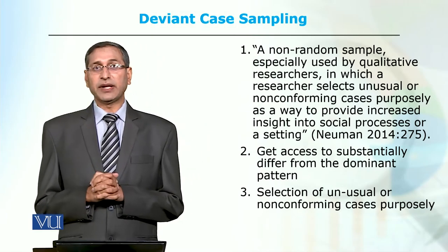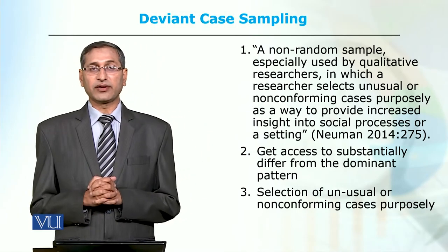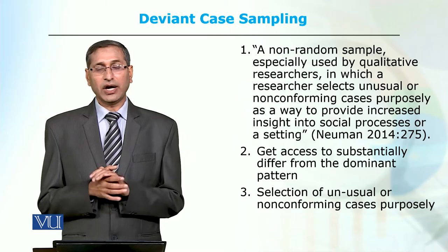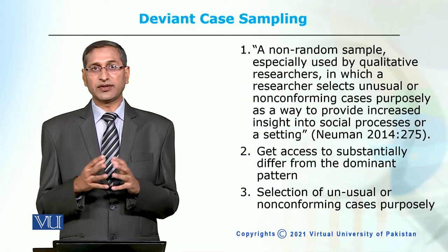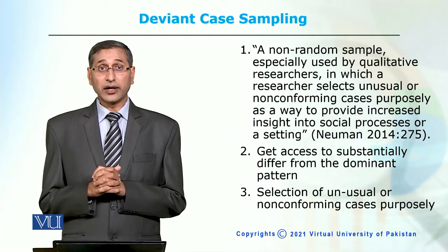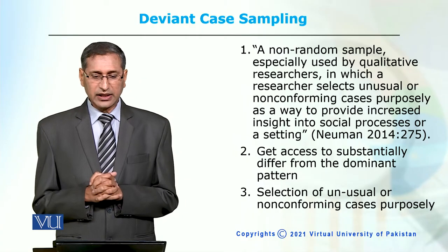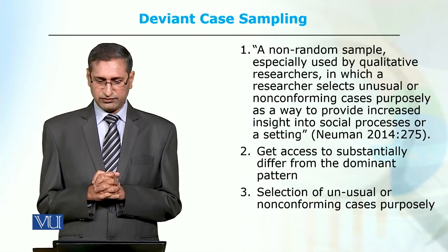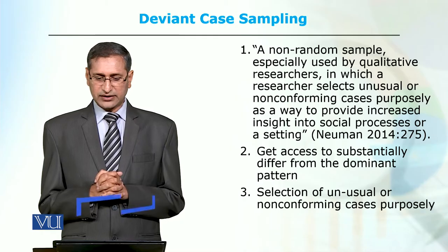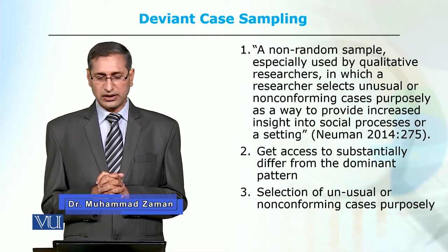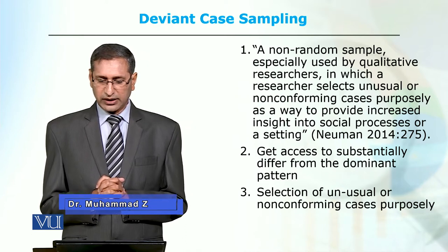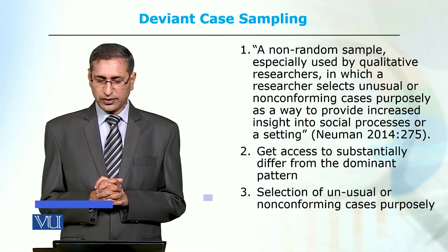Deviant case sampling is a sampling type involving unusual, extreme cases or outliers. According to Newman, deviant sampling is a non-random sampling especially used by qualitative researchers, in which researchers purposely select unusual or non-confirming cases as a way to provide increased insight into social processes or settings.